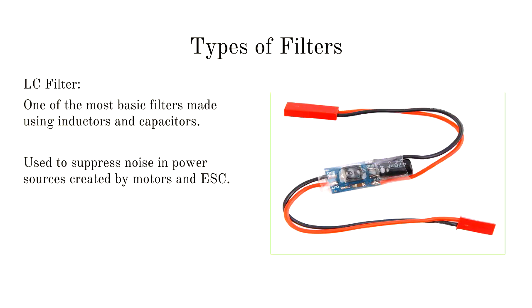There are a lot of types of microwave filters. LC filters are one of the most basic types. They comprise of just an inductor and a capacitor and are used to suppress noise generated by motors. In drones, they improve the electronic speed control system and also enhance image quality.